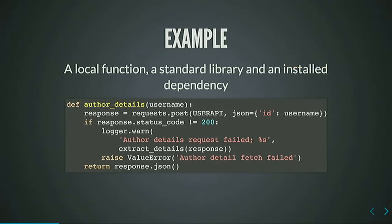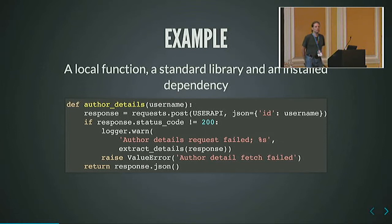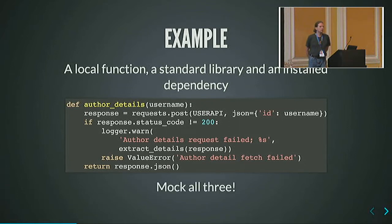Here is a piece of sample code. There are three different elements in there: an external function, a locally defined function, a standard library, and an external library — requests, everybody knows, I hope. Logger is part of the standard library, and extract_details gives a bit more information about the field response. That's a local function — not what we're testing. What would you mock? Which of those functions would you not mock? You mock everything. Everything here is out of scope; it's not part of your unit, so you mock those things.